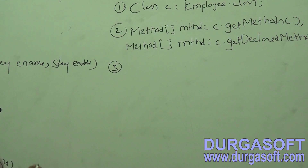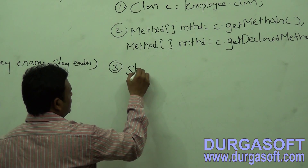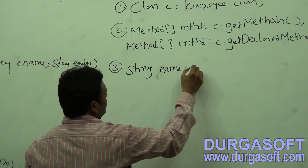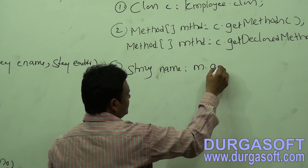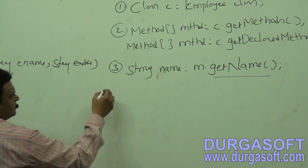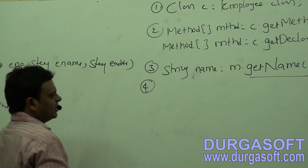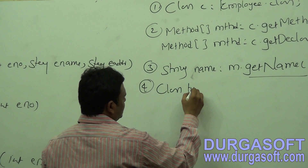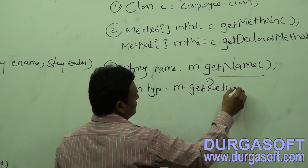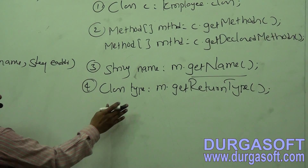After getting the method array, to get details about each method: to get the name of the method use String name = m.getName(). To get the return type of the method, use Class type = m.getReturnType(). By using getReturnType(), we are able to get the return type of the method in the form of a Class object.